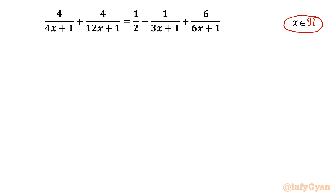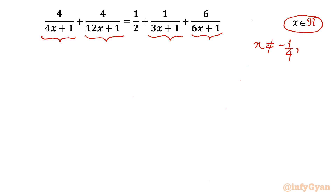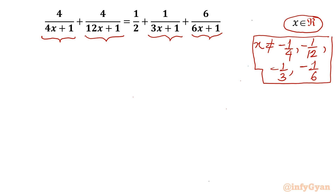Let's get started by writing the domain of the equation. Denominators cannot be zero, so the exempted values are: x cannot equal −1/4 (from the first denominator), −1/12 (from the second denominator), −1/3 (from the RHS), and −1/6. These values of x will be exempted.